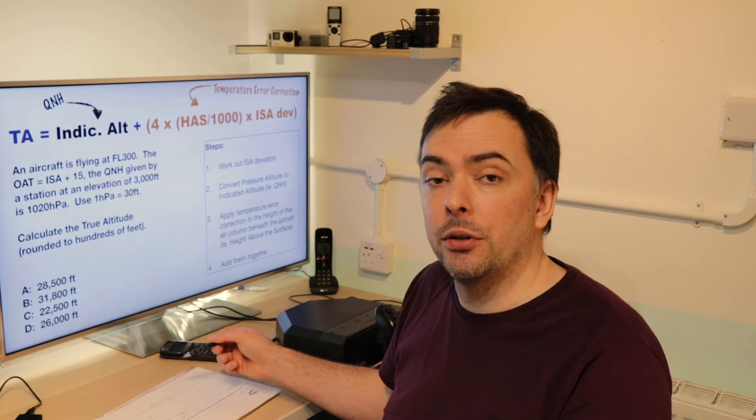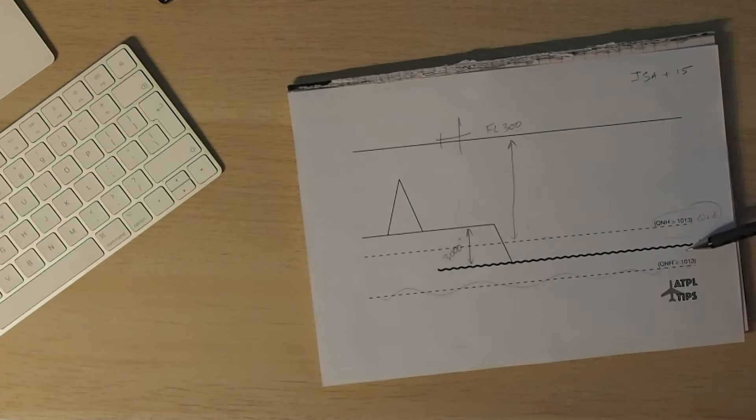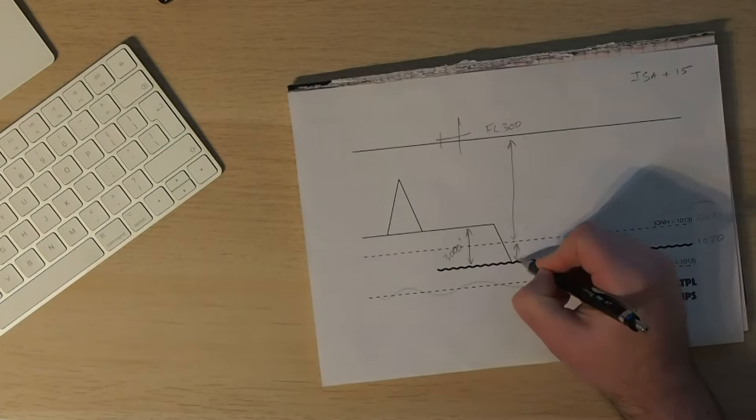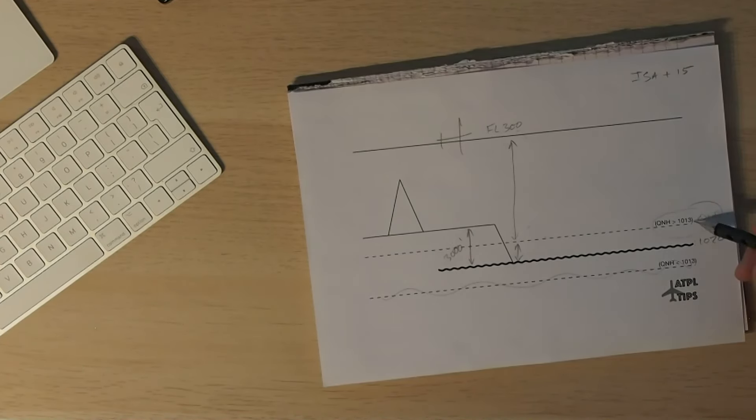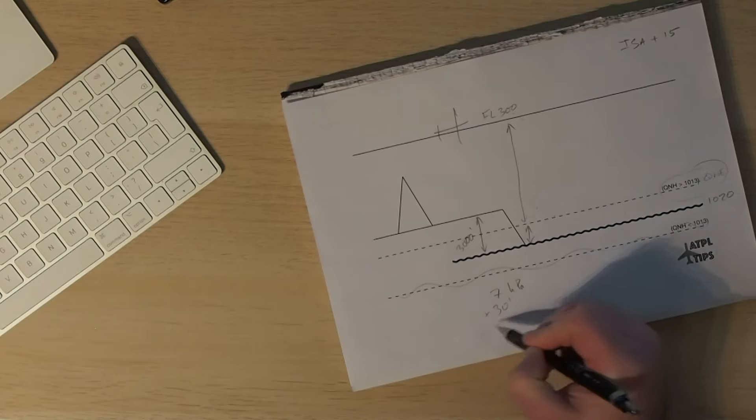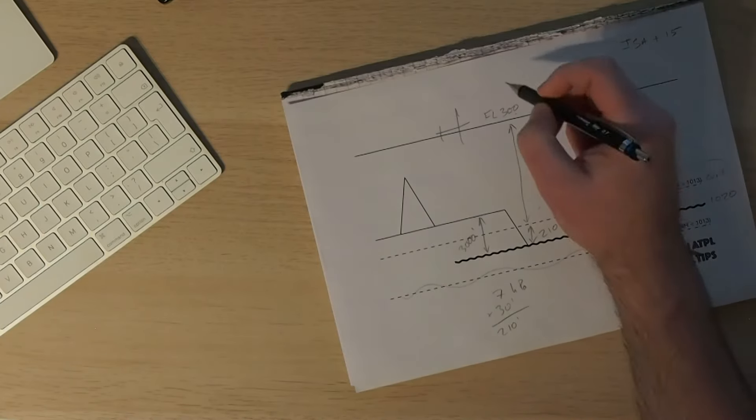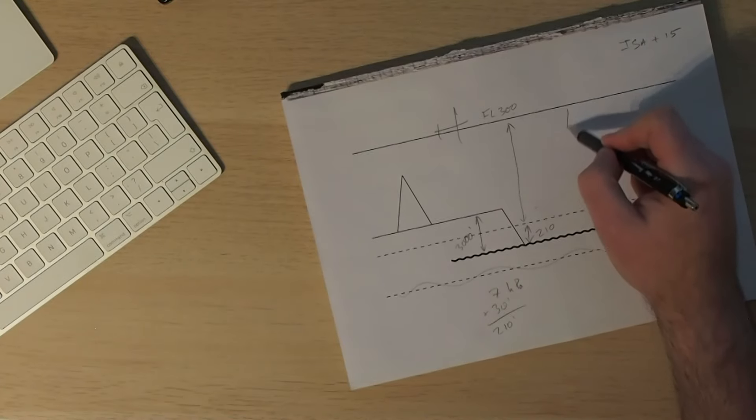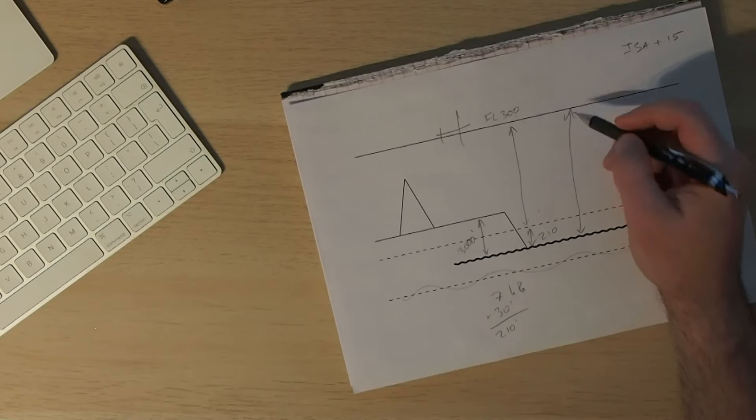So let's convert our pressure altitude into an indicated altitude. We're at 30,000 feet relative to our reference datum of 1013. However, today we've got a higher pressure. So we also need to add this space to our 30,000 in order to get our indicated altitude. Well, the difference between 1020 and 1013 is seven hectopascals. Today they've told us to use 30 feet. So we can do seven times 30 and that will give us an additional altitude of 210 feet. So our indicated altitude is 30,210. Perfect.